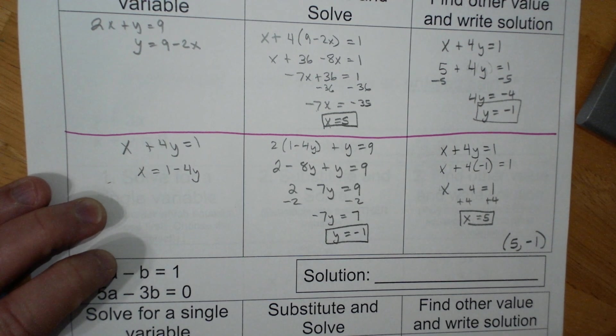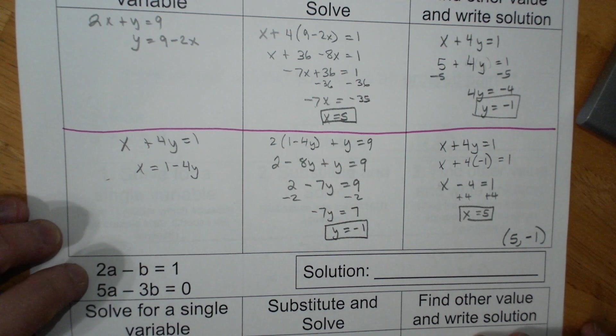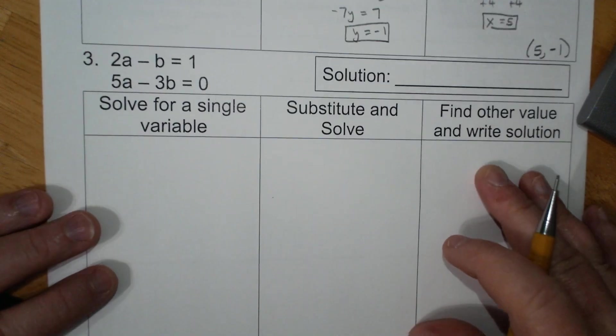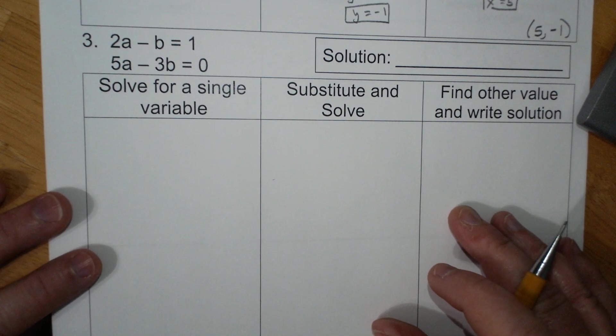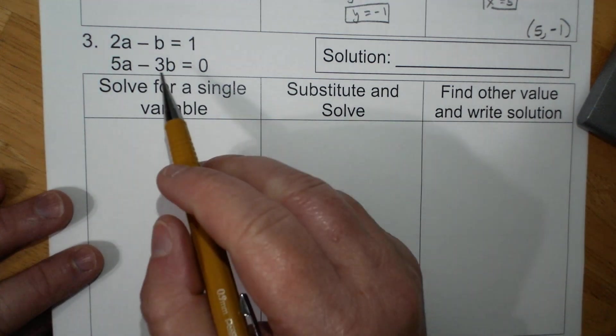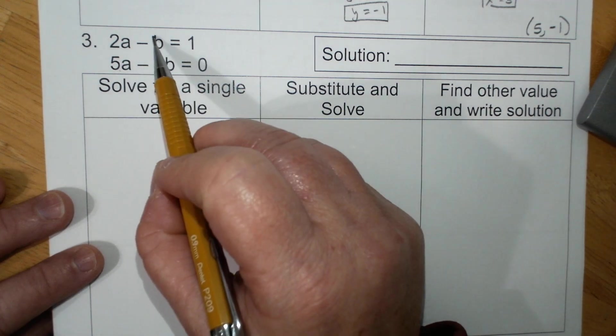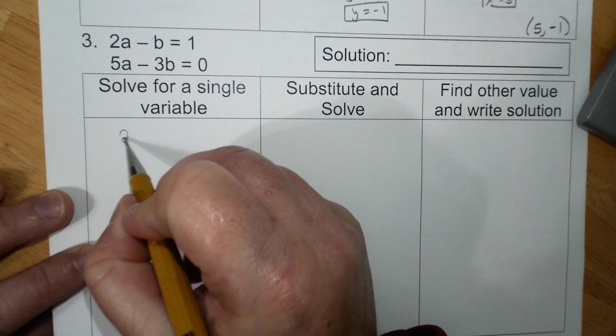This one, solve for a variable. 3 and 5 would cause fractions. There's a 1 right here so I'm gonna use this one. 2a minus B equals 1.